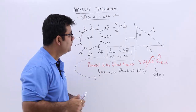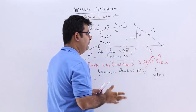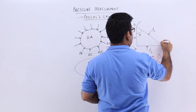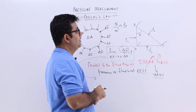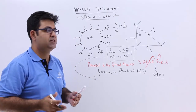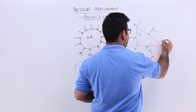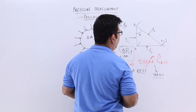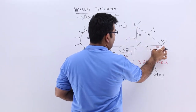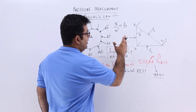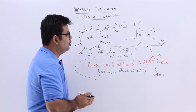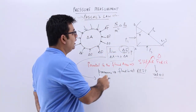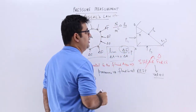To understand Pascal's Law, let us consider a wedge element of fluid. It has some thickness — let us say that thickness is 1. It has an angle theta in it, and three sides: AB, BC, and CA. On side AB, you have pressure P1; on side AC, you have pressure P3; and on the inclined side BC, at angle theta to the vertical, you have pressure P2.